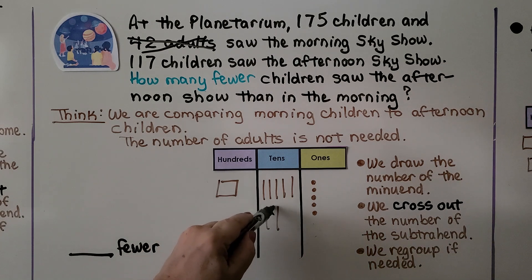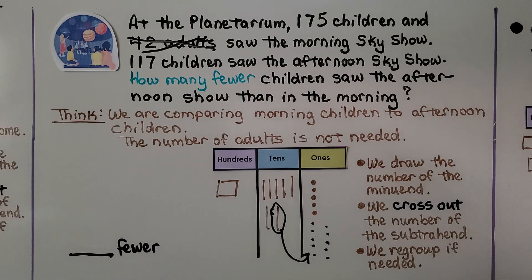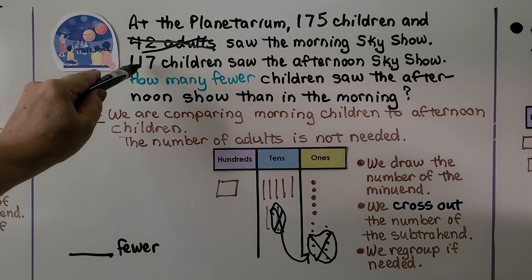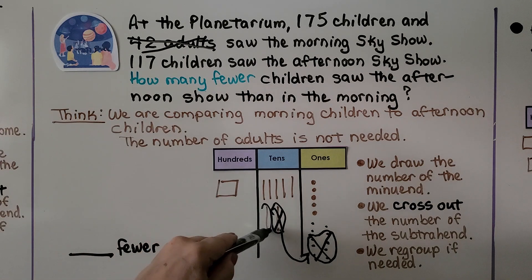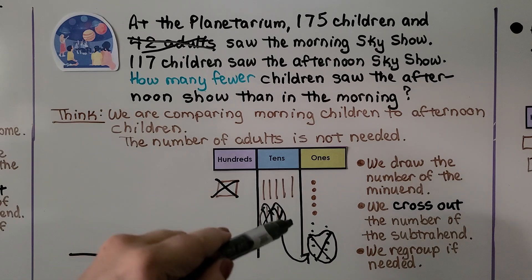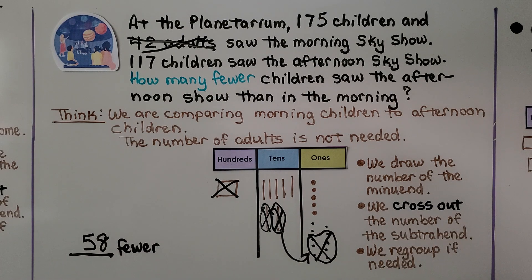We circle a 10 and move it to the ones place as 10 ones. We're going to take 7 of them away, crossing them off. Because that 10 was moved, we cross it off. We still need to take away the 1 ten from 117, so we cross that off too. We take away the 1 hundred — there's only one, so we take it away. Counting what's left: 8 ones, 5 tens, no hundreds, so we leave that blank. We know 58 fewer children saw the sky show in the afternoon than in the morning.